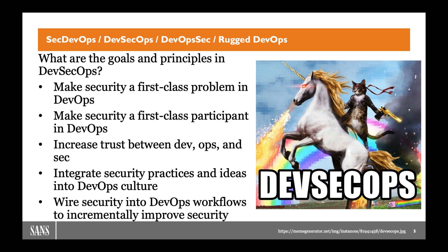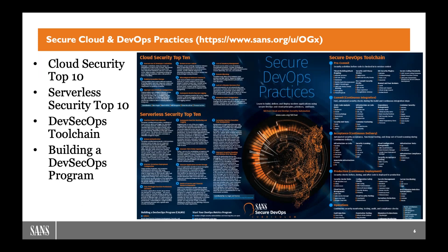Whatever it is you're trying to achieve, it's really about looking at it from a security perspective, making that a first-class problem, and making folks on the security team first-class participants in the overall project. I've seen organizations where Dev, Ops, and Sec all work on the same six-to-eight-person team that takes a product from inception all the way to tearing it down. It's really just about improving a workflow to incrementally improve security along the way.